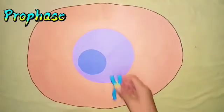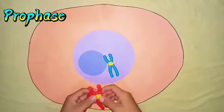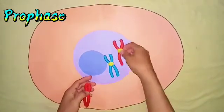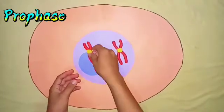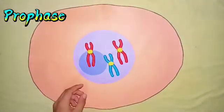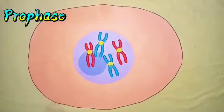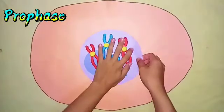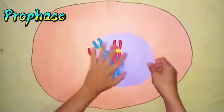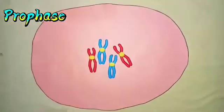We all know that mitosis is divided into four recognizable stages. First is prophase. In prophase, the chromatin in the nucleus begins to condense and becomes visible as the chromosomes composed of two sister chromatids that are joined together at the site of the centromere. Special proteins attach to the centromere to form the kinetochore. Finally, the nuclear membrane disintegrates and the nucleolus disappears.